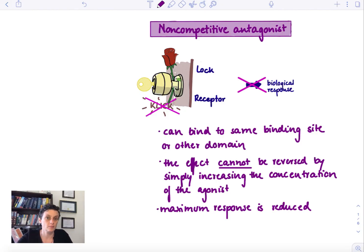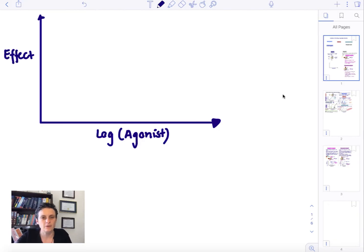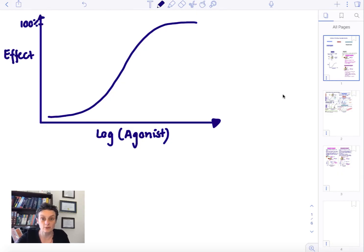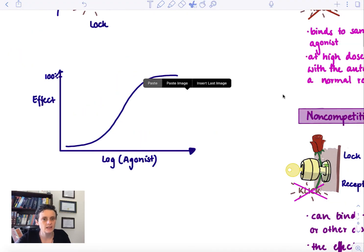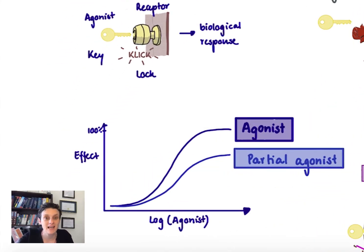How can we measure the responses of agonists or antagonists? We do this with so-called dose-response curves — dose, because we're going to use increasing doses of the drug, and response for the effect. On logarithmic paper, this normally looks like a sigmoid curve where the maximum is 100% effect. That's how an agonist looks. We can also introduce the partial agonist: whereas a full agonist has a maximum response, a partial agonist, as the name implies, has only a partial response. That's how an agonist and a partial agonist would look on a dose-response curve.